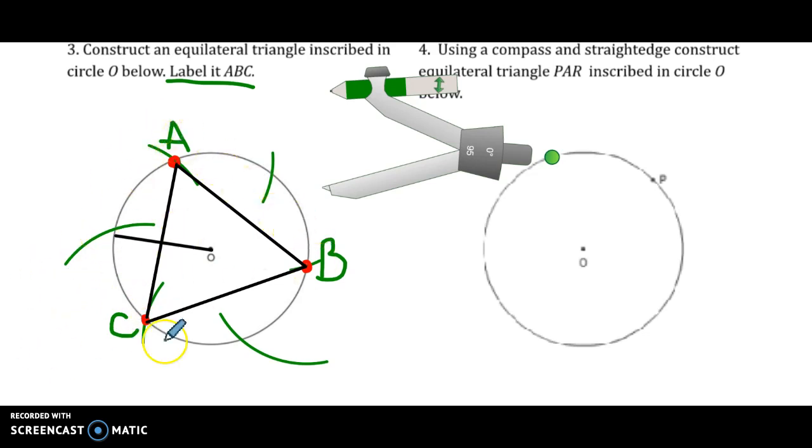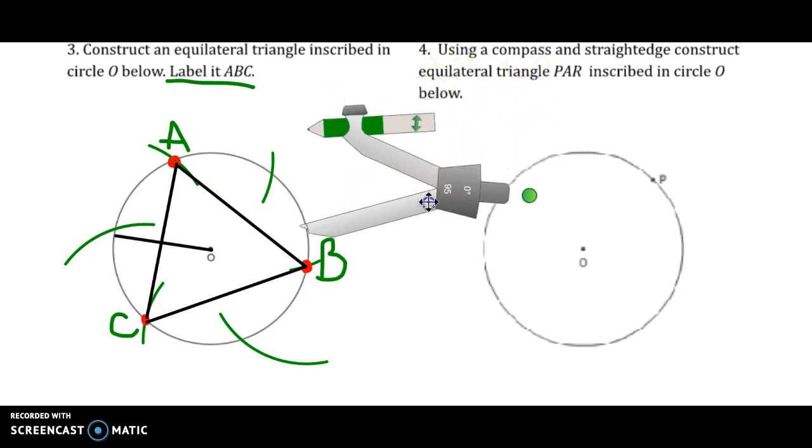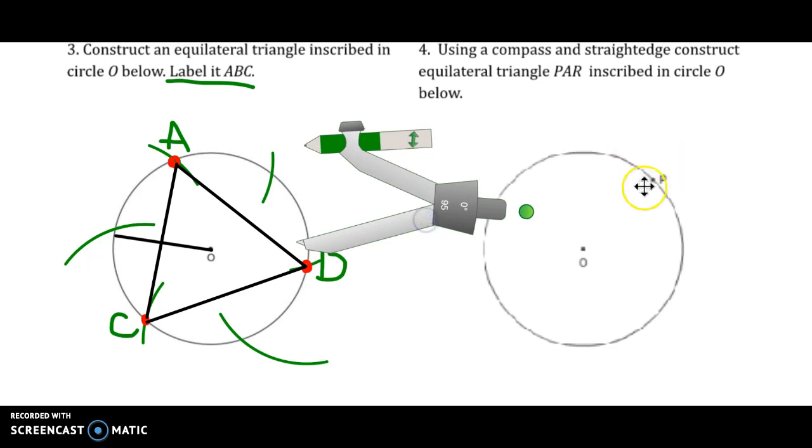For number four we're going to construct an equilateral triangle PAR. So P has to be one of the arcs. Your arc either has to fall on P if you're using method one, and I will demonstrate example number four using method two. So our first step in method two is to draw the diameter. You want P to be an endpoint of that diameter.